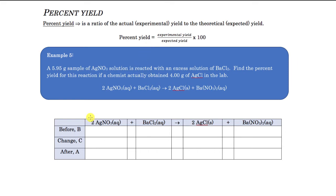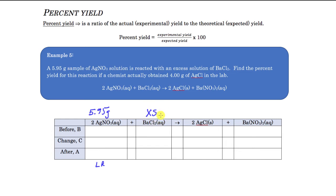We have 5.95 grams of silver nitrate solution reacted with excess barium chloride. I'm going to put that 5.95 grams of silver nitrate here because it's the mass we have. The barium chloride is in excess, meaning there's extra of it — we don't really care about it because we know it will be left over. This tells us we don't have to figure out the limiting reactant; the silver nitrate will be my limiting reactant because barium chloride is stated as excess.